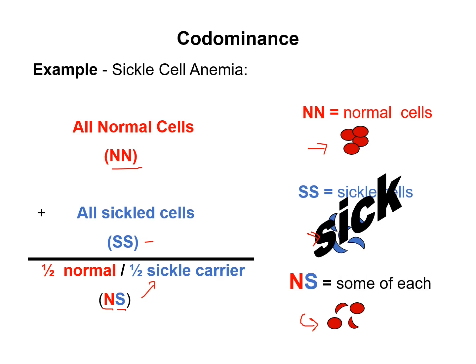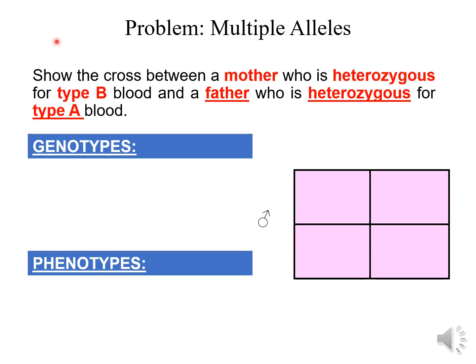The homozygous for the sickle allele — SS — is the one that is sick. This is an exercise you can solve before class: list both genotypes and phenotypes, draw the gametes of the female and the gametes of the male to solve this Punnett square. If you have any questions, please let me know and I will post a video about it.